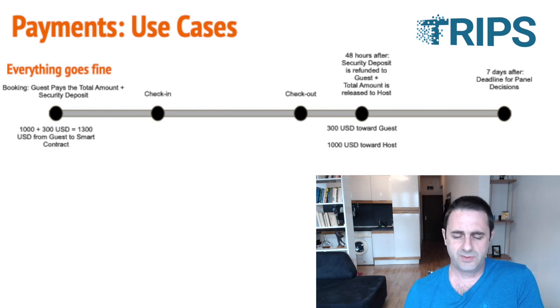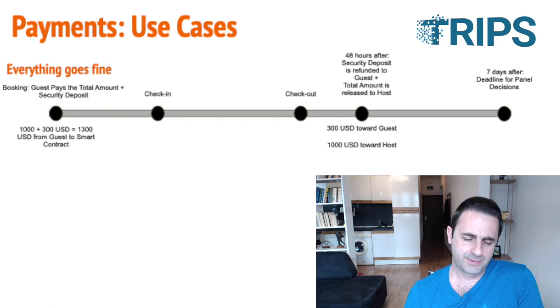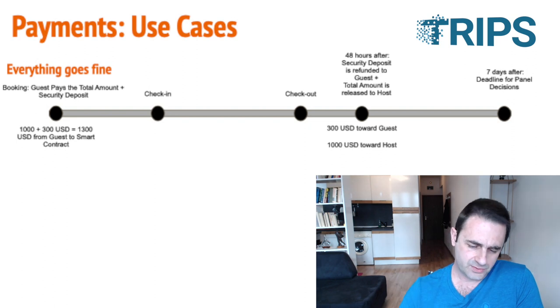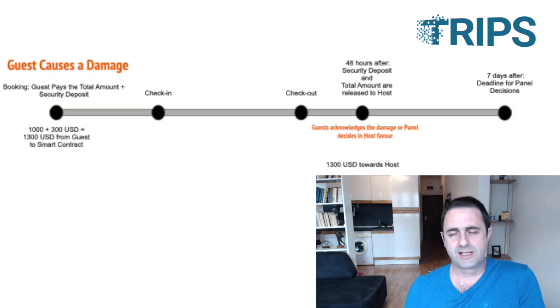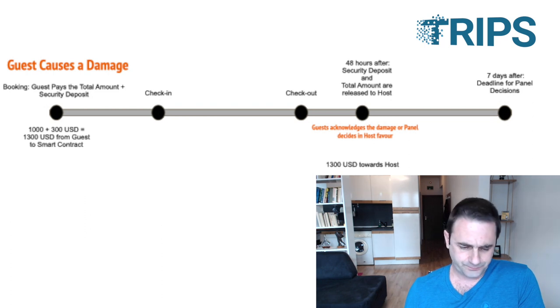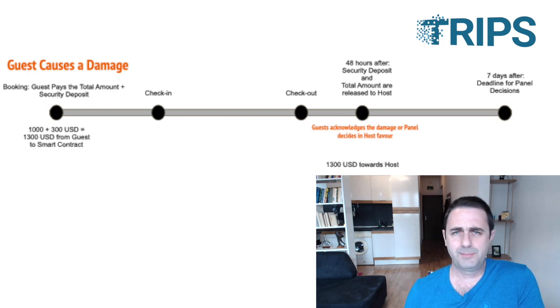Everybody's happy, nothing else happened, and reviews follow. Now the second case: the guest causes damage. The booking happens the same way — a thousand dollars plus three hundred dollars go to the smart contract.